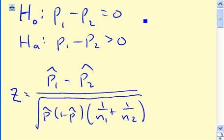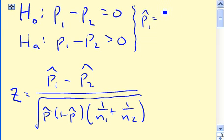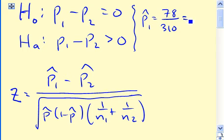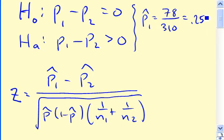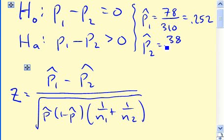Alright, well let's see here. For our sample, P1 hat, that was, what, 78 out of 310. And that turns out to be about 0.252. P2 hat is 38 out of 190, and that's actually exactly equal to 0.2, one-fifth.